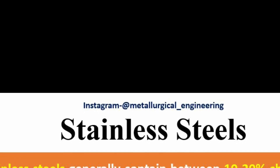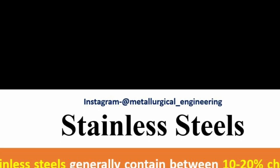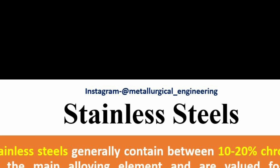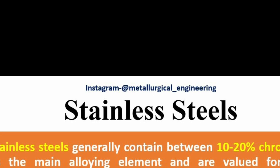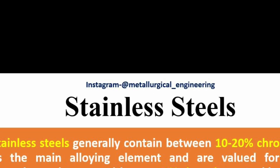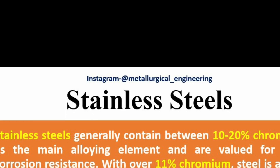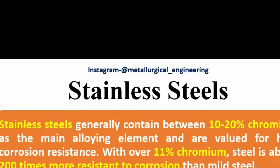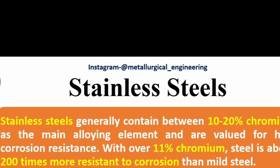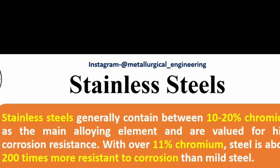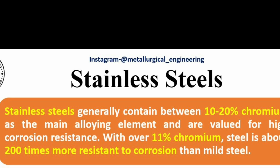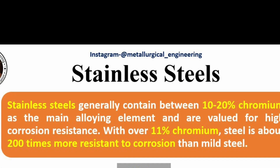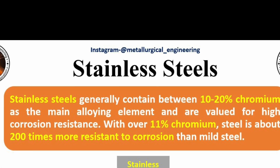Last is stainless steel. Stainless steels generally contain between 10–20% chromium as the main alloying element and are valued for high corrosion resistance. With over 11% chromium, steel is about 200 times more resistant to corrosion than mild steel.